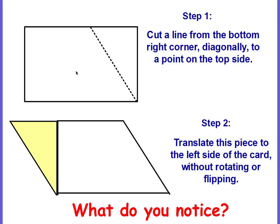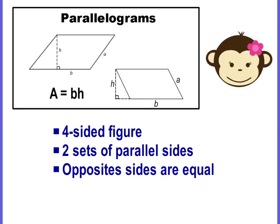What happened to the area? Did it change from the rectangular index card to our new parallelogram shape? We cut part of it off, but we didn't discard it. We just moved it, relocated it. The area of the part we cut off is still here, so the area stays the same.